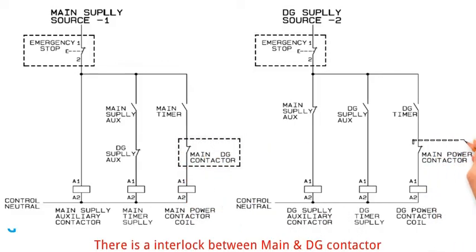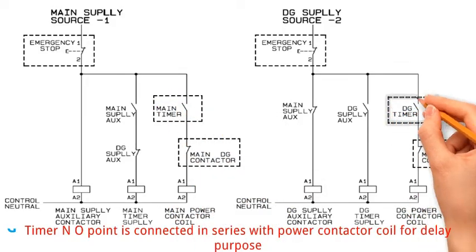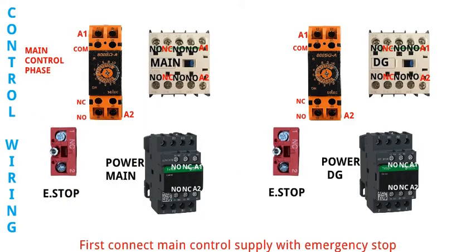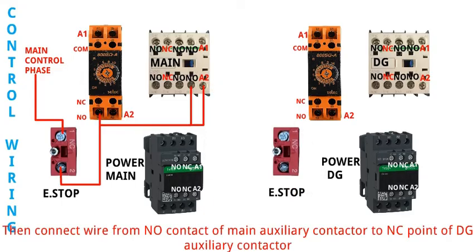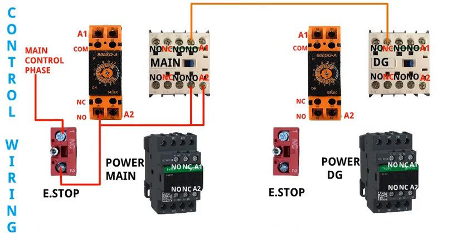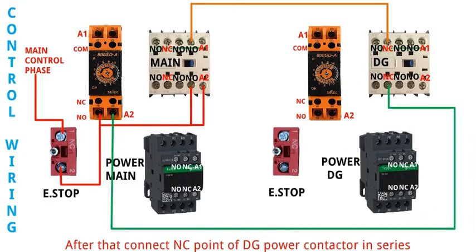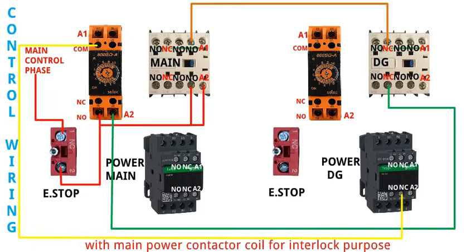There is an interlock between the main and DG contactor. The timer NO point is connected in series with the power contactor coil for delay purpose. Let's start wiring. First connect the main control supply with the emergency stop. After that connect it with the main auxiliary coil, and NO point of timer and contactor. Then connect a wire from the NO contact of main auxiliary contactor to the NC point of DG auxiliary contactor. From the other side of the NC point, connect it with the main timer auxiliary supply. After that connect the NC point of DG power contactor in series with the main power contactor coil for interlock purpose.